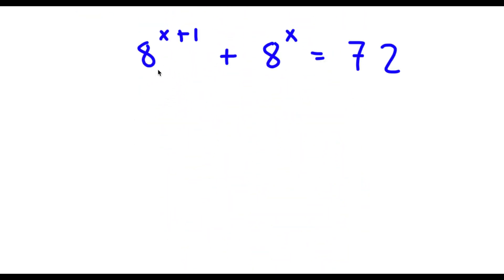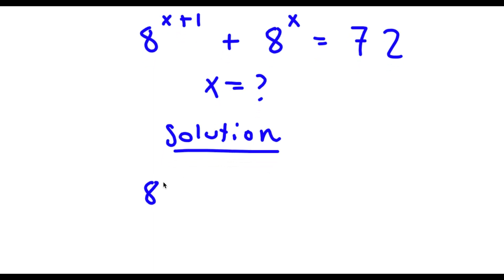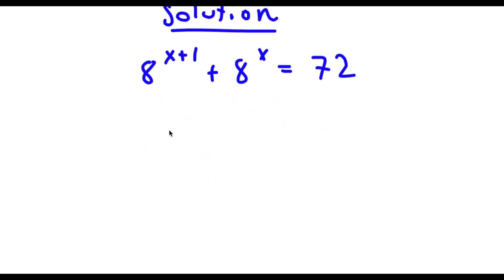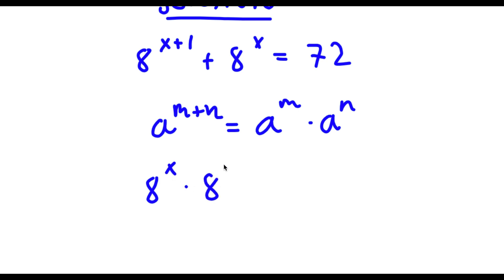Alright, so I have 8 to the power of x plus 1 plus 8 to the power of x is equal to 72. So I want to find the value of x here. Now if I have something in the form 8 to the power of m plus n, this is equal to 8 to the power of m times 8 to the power of n. So 8 to the power of x plus 1 equals 8 to the power of x times 8 to the power of 1. So now I have that plus 8 to the power of x is equal to 72.